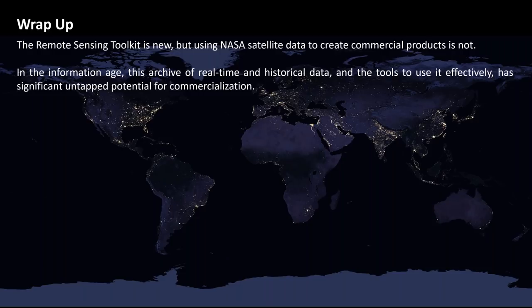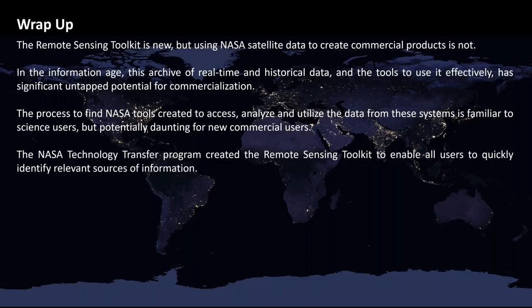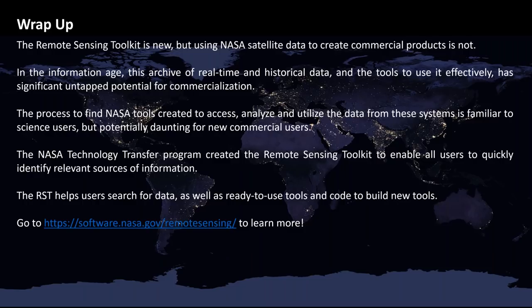The process to find the NASA tools and data sources created to analyze and utilize data from these systems is familiar to many science users, but it's potentially daunting for new users or those coming from different backgrounds. So the Tech Transfer Program created the Remote Sensing Toolkit to enable all users of a wide variety of backgrounds to quickly determine if NASA has relevant sources of information for their particular application. The RST helps users search for data, as well as the ready-to-use tools, systems, and code to help build your own tools and custom workflows. Please go to software.nasa.gov/remote-sensing to learn more about the Remote Sensing Toolkit and to explore it yourself.